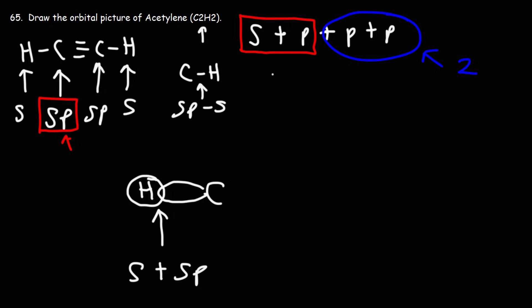Now what about the sigma bond that's found in the triple bond? What type of orbital overlap do we have there?